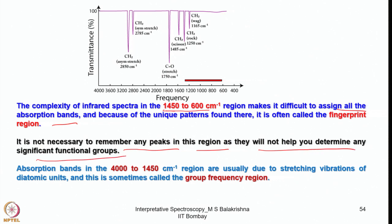You only need to identify that the fingerprint pattern is present; there is no need to interpret all the bands as it is unnecessarily complex. Absorption bands in the region 4000 to 1450 cm⁻¹ are usually due to stretching vibrations of diatomic units and this is sometimes called the group frequency region, which is quite important.